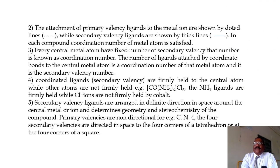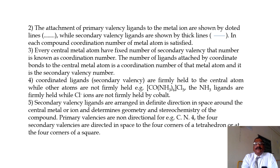The attachment of primary valency ligands to the metal ion are shown by dotted lines, while the secondary valency ligands are shown by thick lines. In each compound, the coordination number of the metal atom is satisfied. Every central metal atom has a fixed number of secondary valencies, and that number is known as the coordination number. The number of ligands attached by coordinate bond to the central metal atom is the coordination number, which equals the secondary valency number.